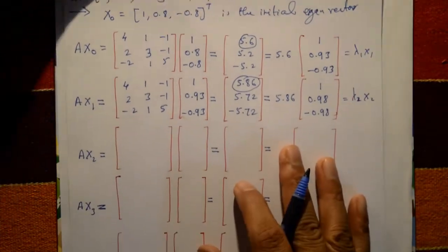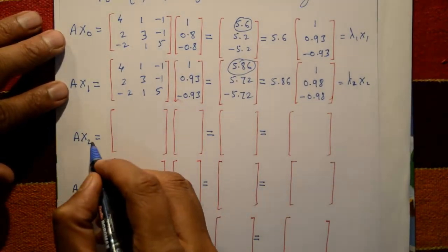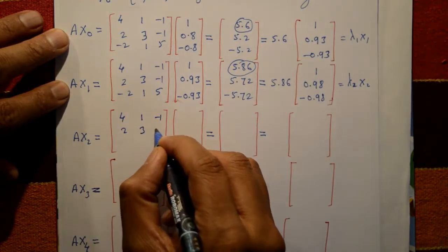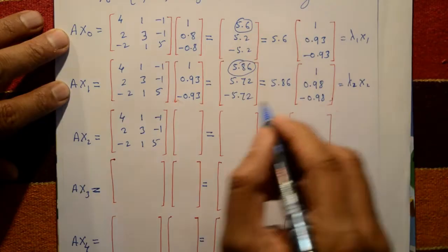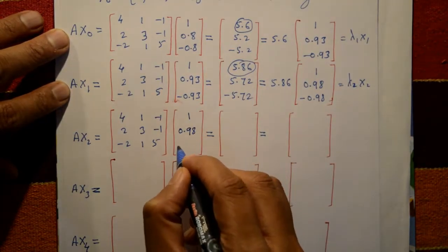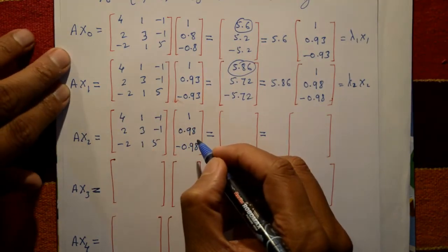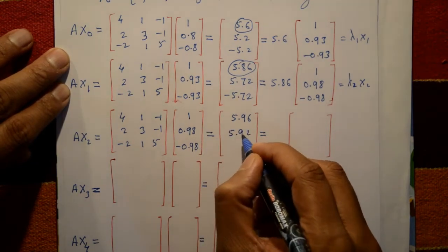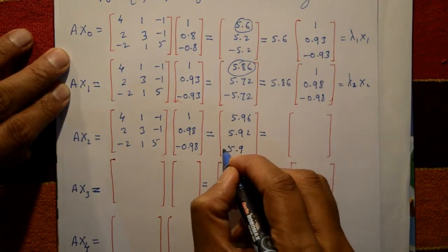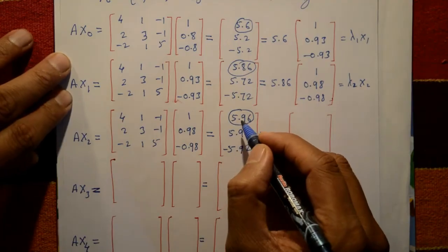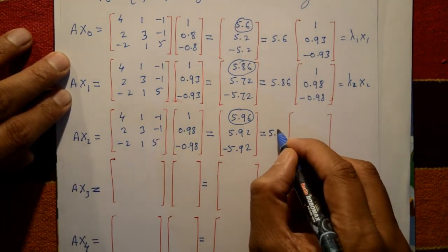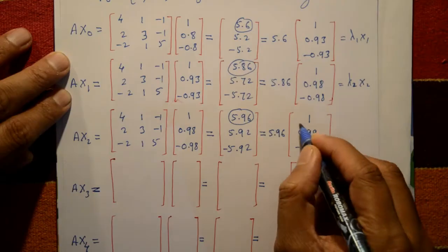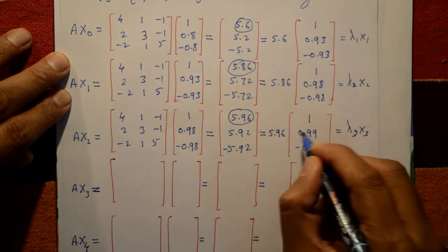Third iteration: compute A·x2. Matrix A = [4, 1, -1; 2, 3, -1; -2, 1, 5] and x2 = [1, 0.98, -0.98]ᵀ. First row column gives 5.96, second row 5.92, third row -5.92. The largest element is 5.96; after normalization the inside is [1, 0.99, -0.99]ᵀ. This technique is normalization. This gives λ3 = 5.96 and x3 = [1, 0.99, -0.99]ᵀ.